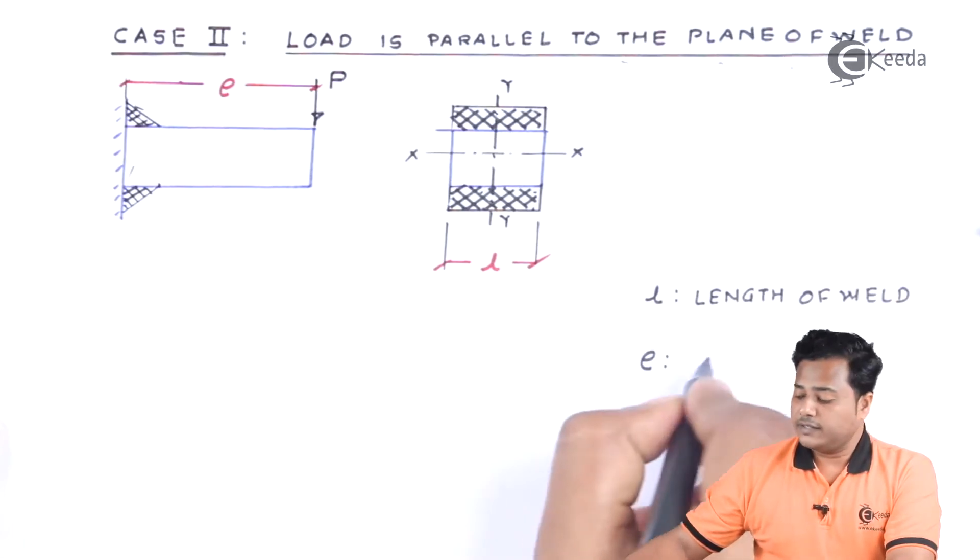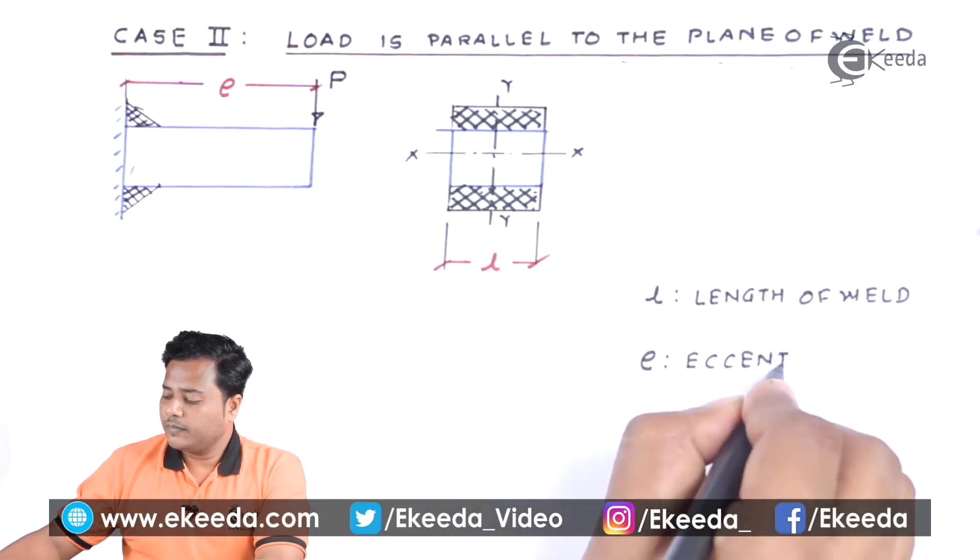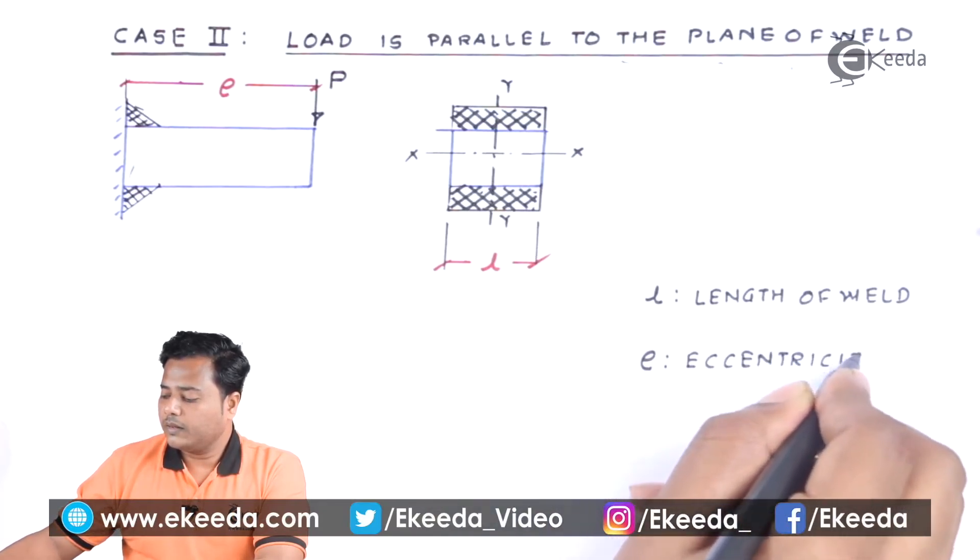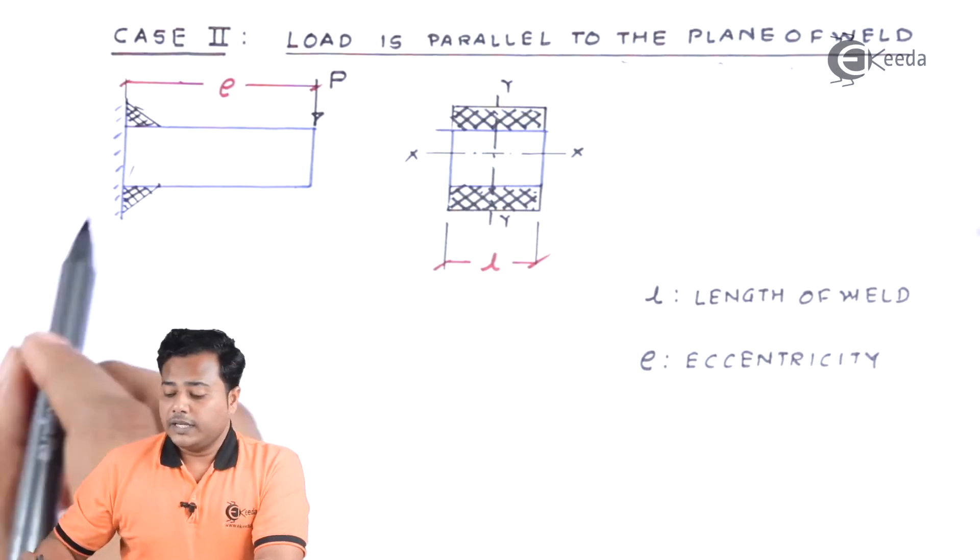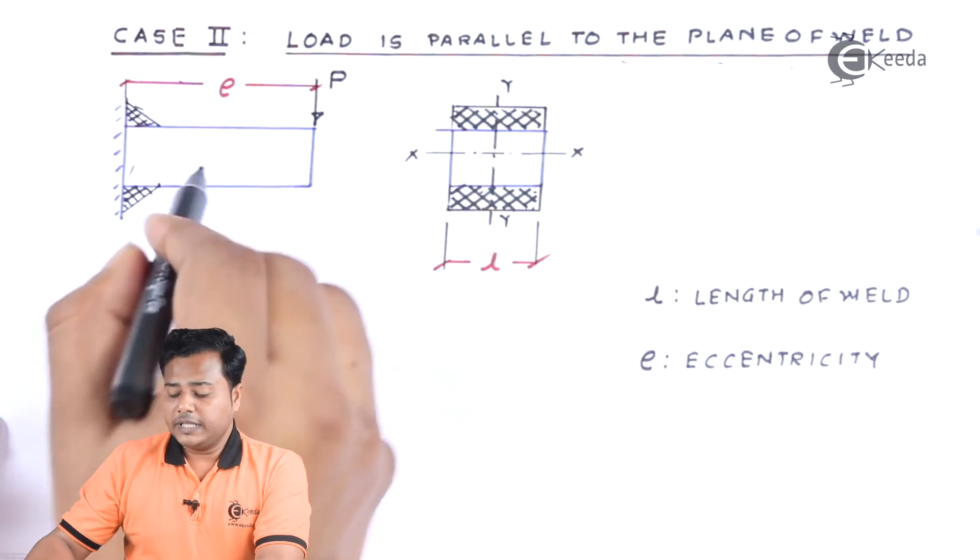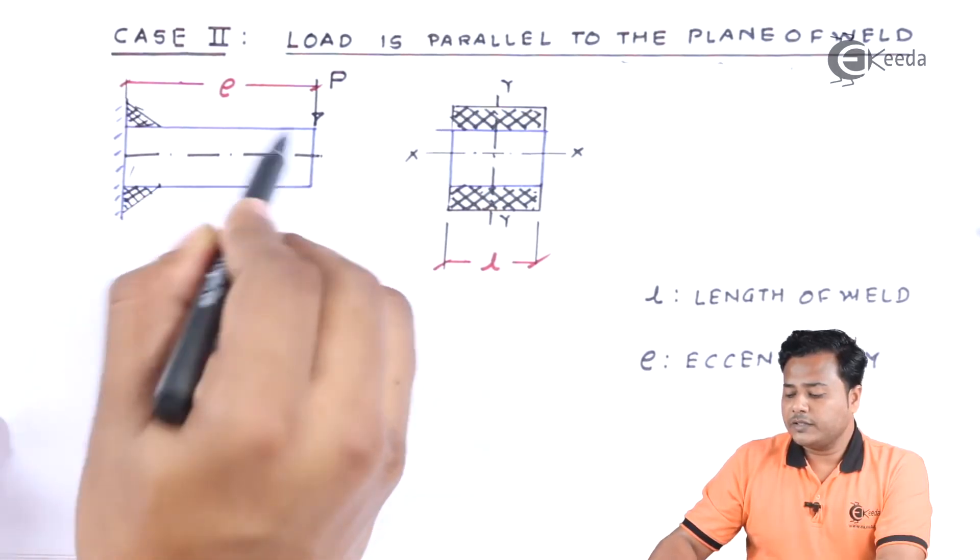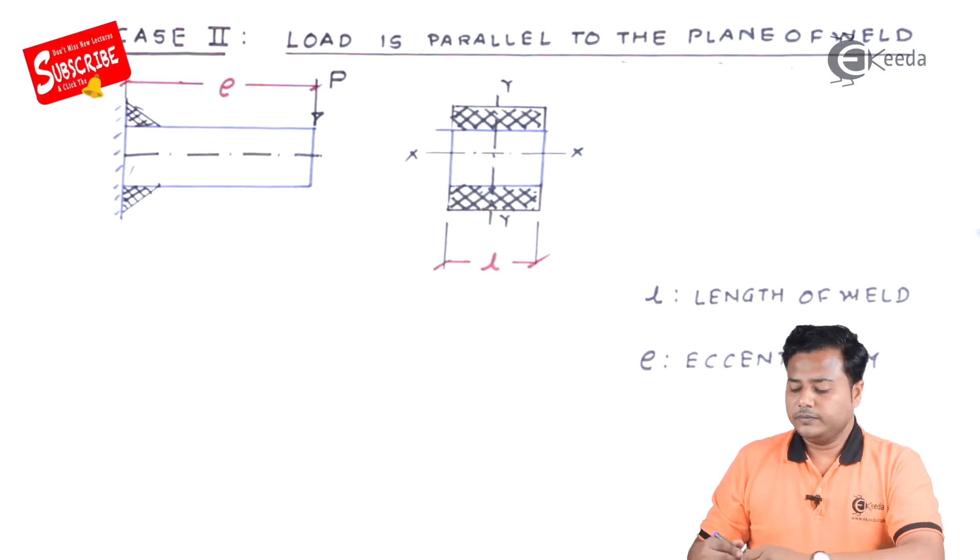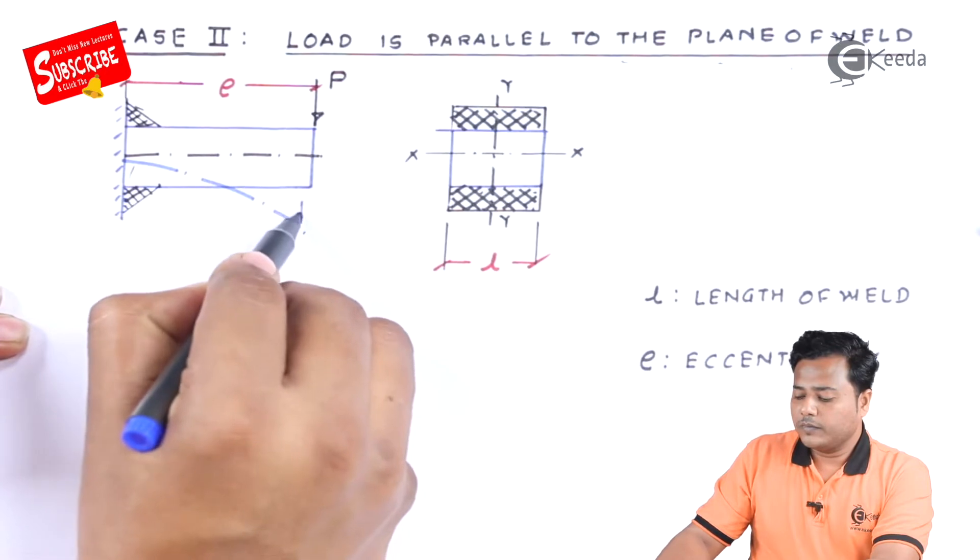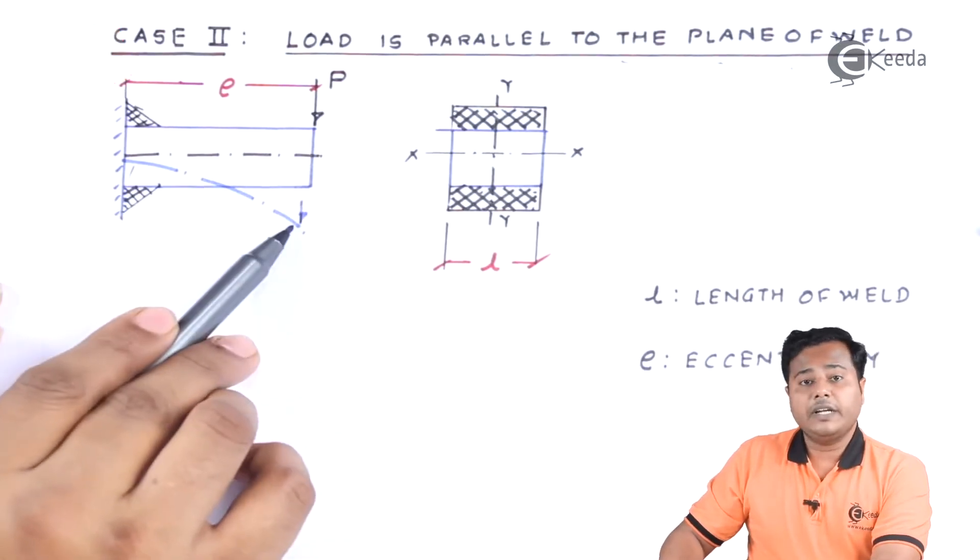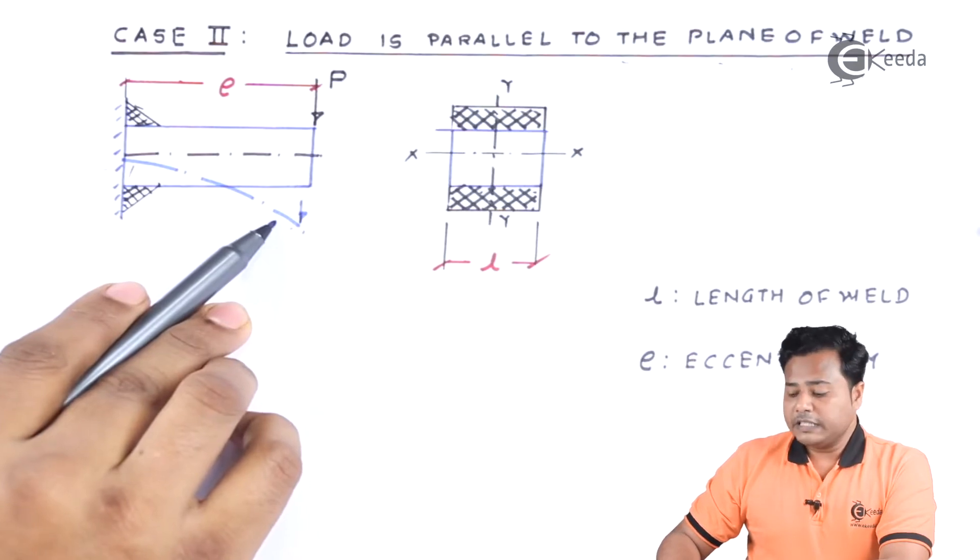And second thing is eccentricity. Now two things we need to understand. When this particular thing happens there has to be bending. If you can imagine this, this is how the bending will take place. If we imagine, bending will take place in this manner.